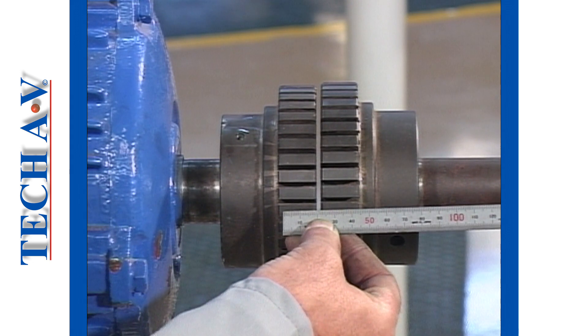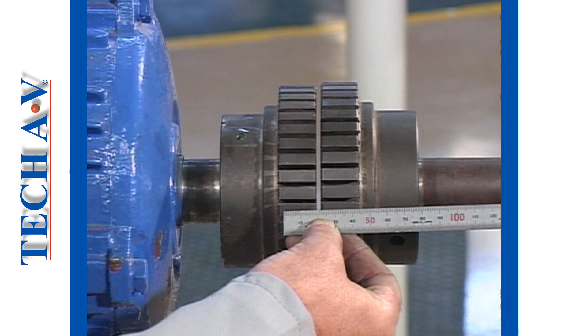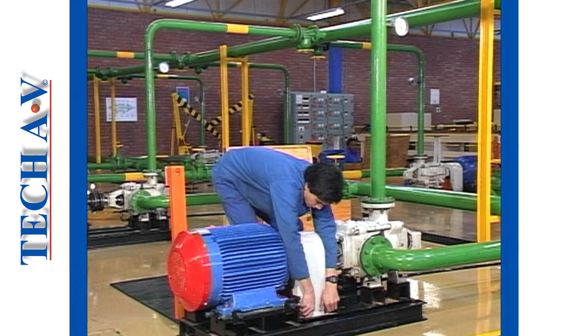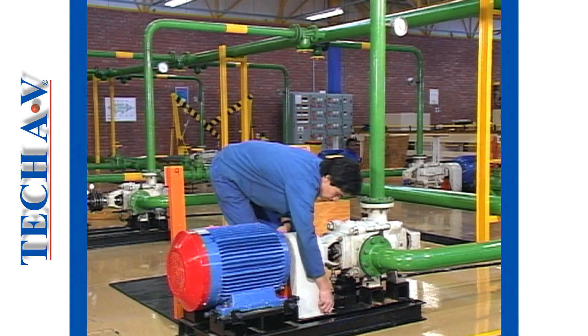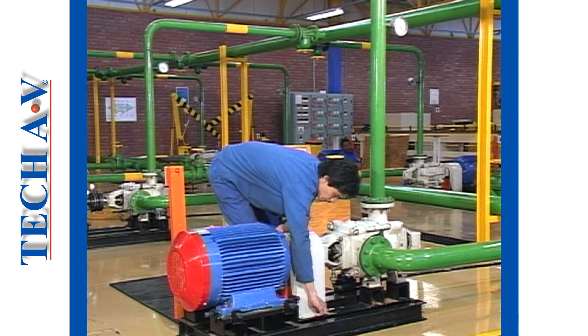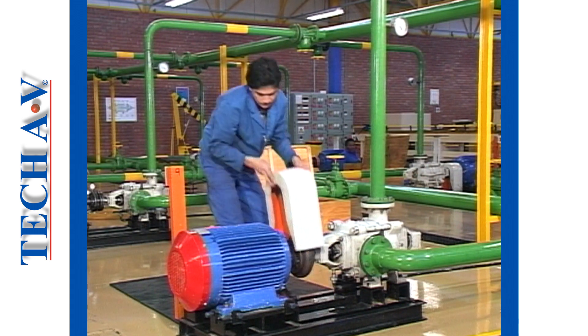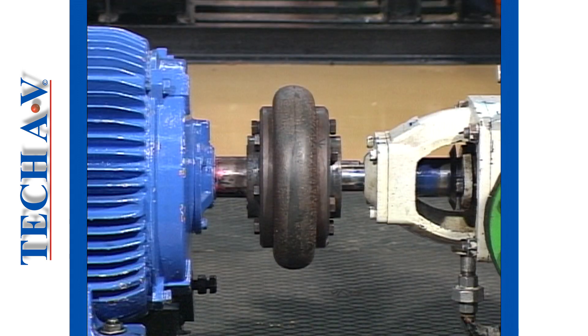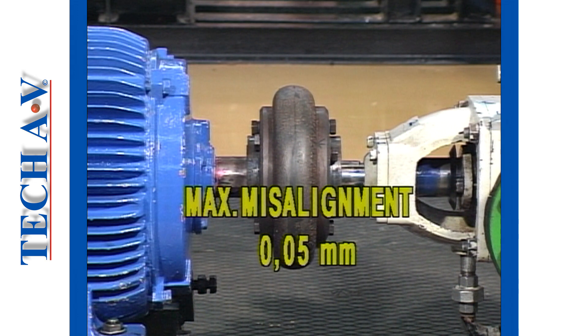Half-coupling should never contact each other. A specified gap must be maintained to allow for shaft end float and thermal expansion factors. Do not expect a flexible coupling to compensate for alignment inaccuracies caused during fitting. Although the term flexible implies that a coupling can bend or twist, in actual fact, the error of misalignment would never exceed 0.05 mm.